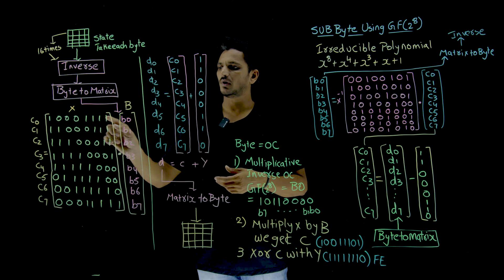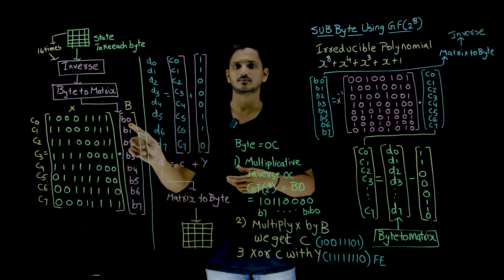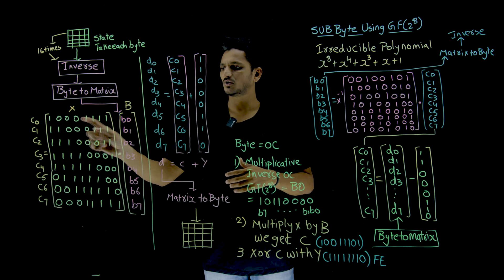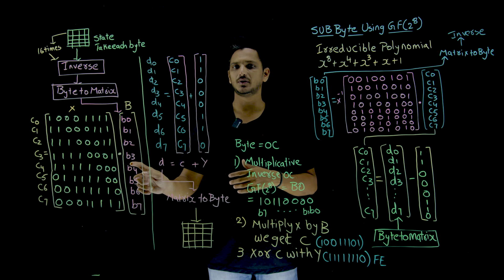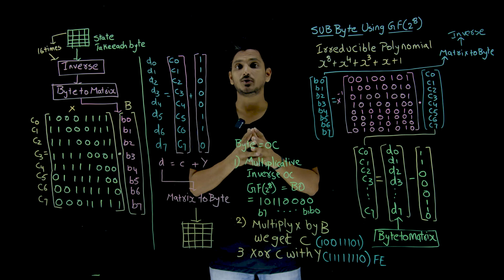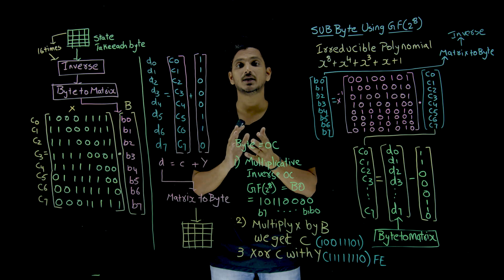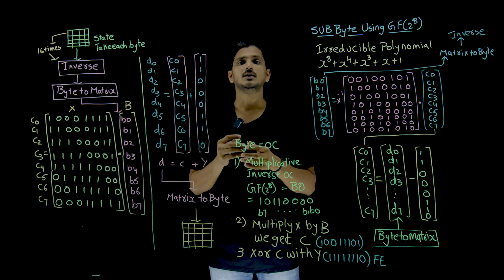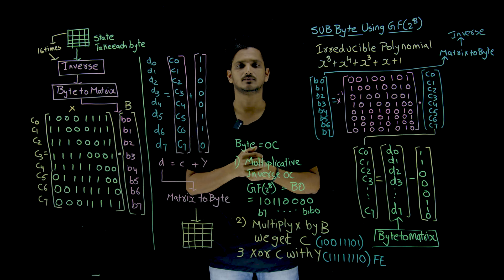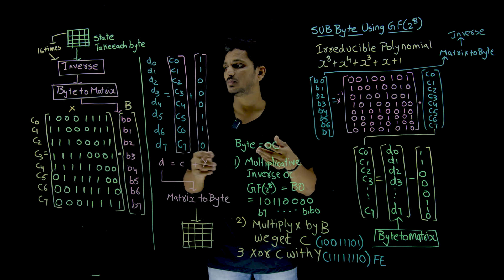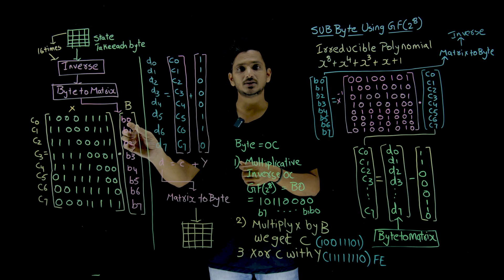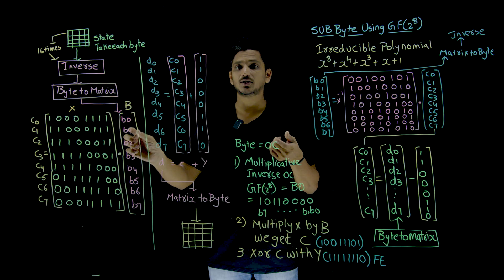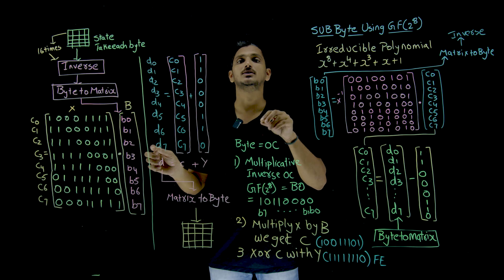For example, 1 multiplied by B0, addition, 0 multiplied by B1, addition, 0 multiplied by B2, addition, 1 multiplied by B3 — that is how we are going to do it. But the point you need to understand here: multiplication we are going to do like GF of 2 multiplication, which means AND operation. GF of 2 addition means XOR operation we are going to do.